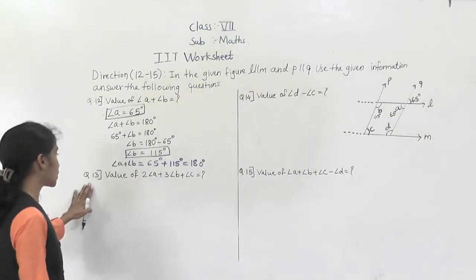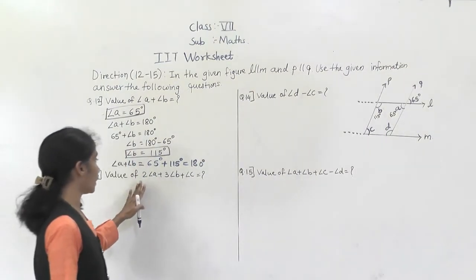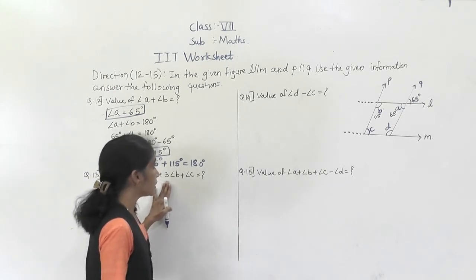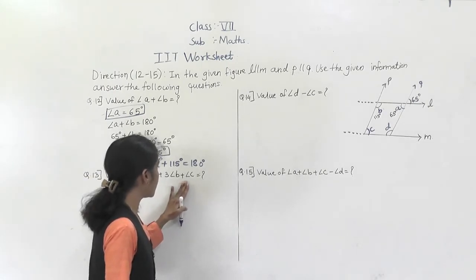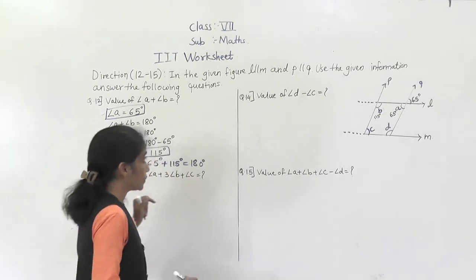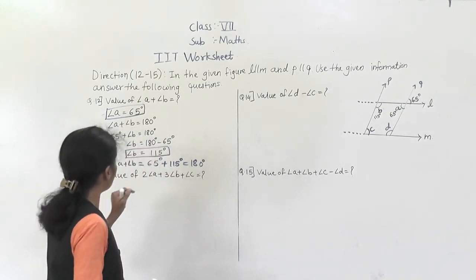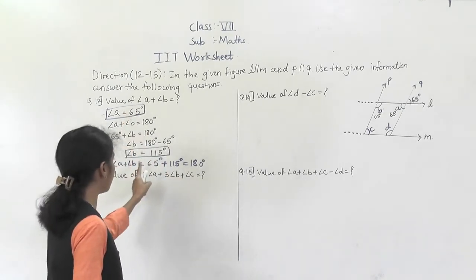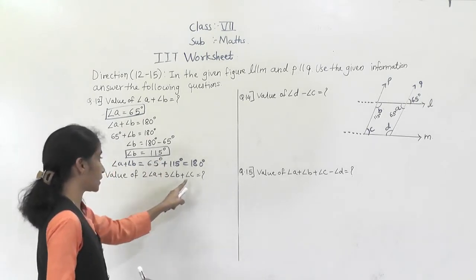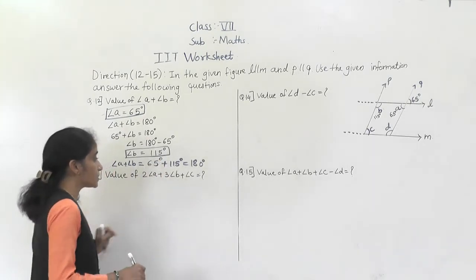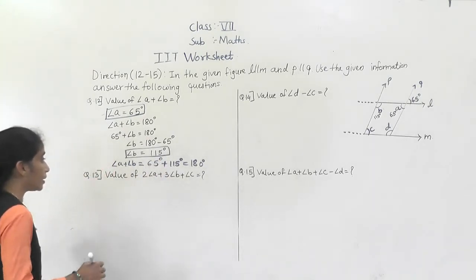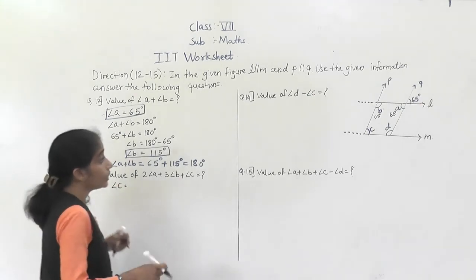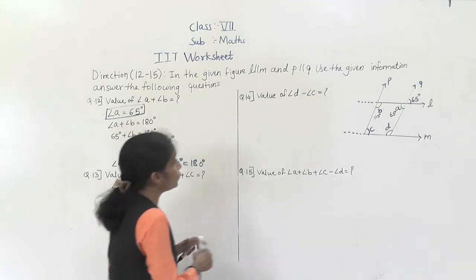Now question number 13: find the value of 2 angle A plus 3 angle B plus angle C. We already have angle A equal to 65 degrees and angle B equal to 115 degrees. Now we have to find the value of angle C.